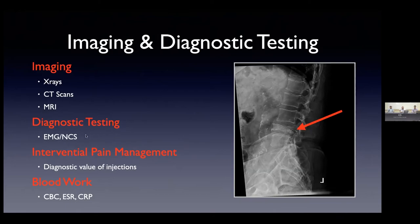Other tests we use include physiological tests like EMG and nerve conduction studies, done by our neurology colleagues and used for localization. We also have colleagues in interventional pain management who perform procedures for the treatment of pain, but we can also use their interventions as diagnostic tools. Sometimes it's not clear where the source of the pain is, and if you do an injection at a specific level of the spine and a patient gets a great response, then we know where to focus our surgical efforts.